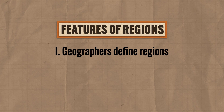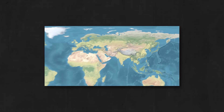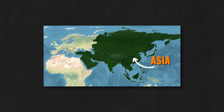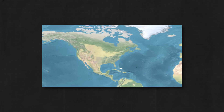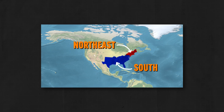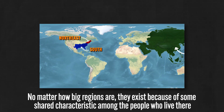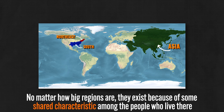Based on the various shared characteristics of the people who live there, geographers define regions and that helps them compare to other regions. The second thing to remember is that regions don't come in standard sizes. They can be giant and cross national boundaries, like Asia for example, or they can occur on a smaller scale within a nation, like here in the United States we have the South and the Northeast. No matter how big these regions are, they exist because of some shared characteristic among the people who live there.